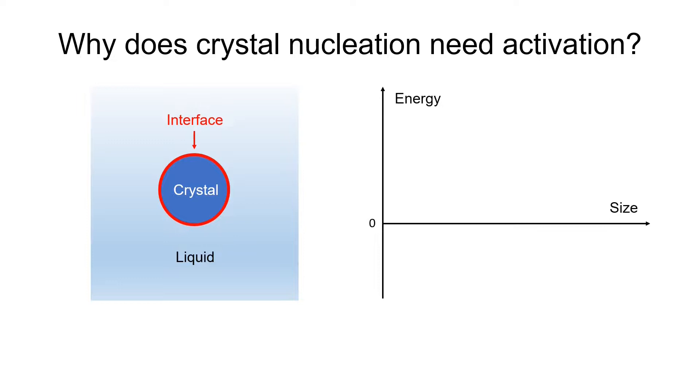And the extra surface energy increases the energy of the whole system. So we have this plot now. Crystallization lowers the energy, while creating interface increases energy, which is unfavored to crystal growth. So the sum will first be positive, and then negative. The positive part is the energy barrier. That's why the hand warmer needs activation to crystallize.